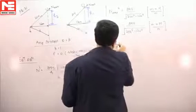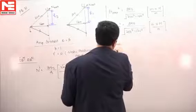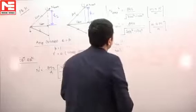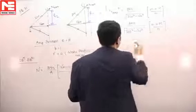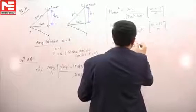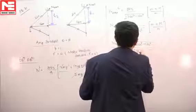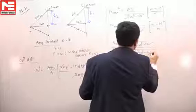So we can directly write n maximum squared upon n minimum squared will be equal to, everything will be cancelled out, under root of 200 squared minus 120 squared upon under root of 200 squared minus 160 squared.